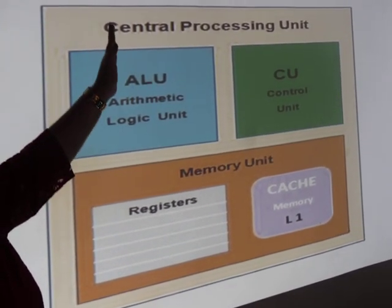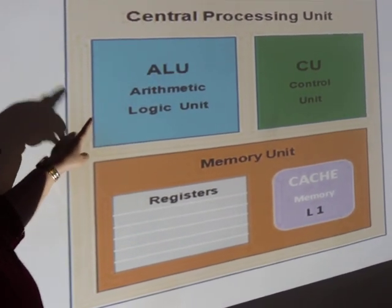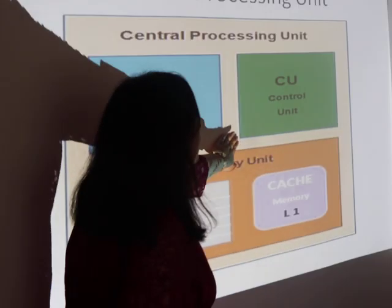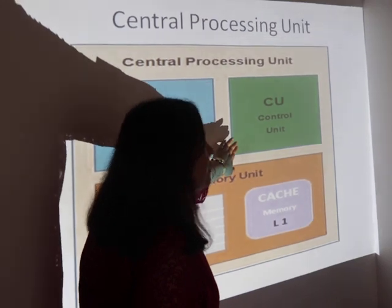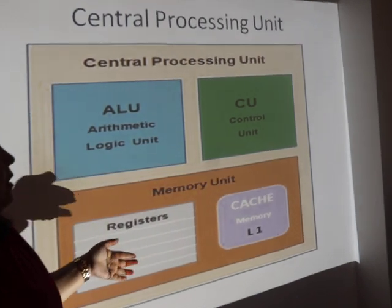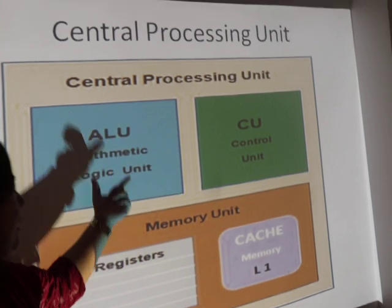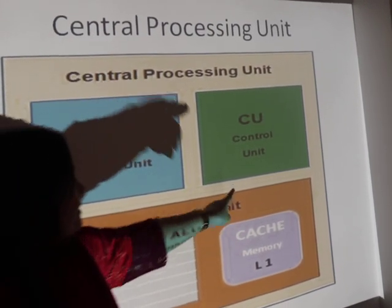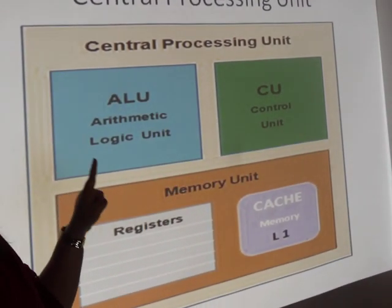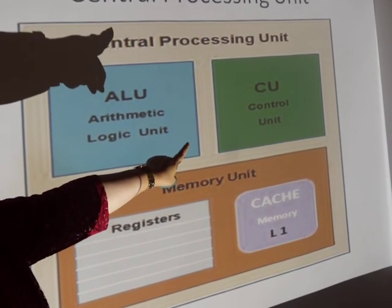The central processing unit is further divided into three parts — control unit, arithmetic logic unit, and memory unit. The control unit is used to control all the operations of different parts of the computer. The data and instructions are also moved from the input device to the arithmetic logic unit to the output device through the control unit. However, the actual data processing activities do not happen in the control unit.